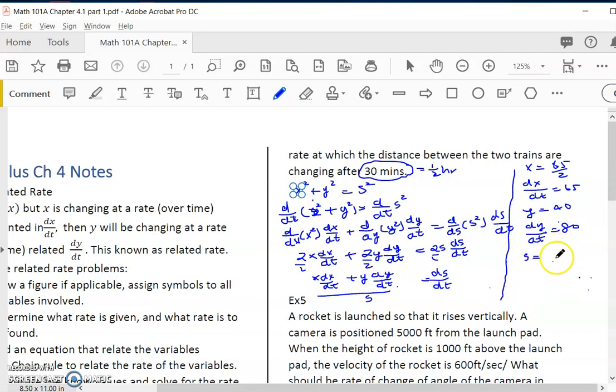Now for s - at this time we would actually know x and y now. So this is 40 and this is 65/2. So s would be square root of 40² + (65/2)².